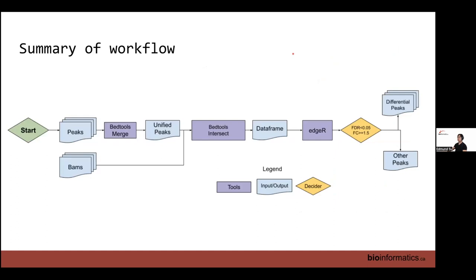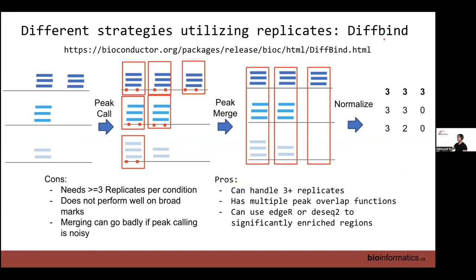To summarize this workflow: start with peaks and BAMs, read peaks into bedtools and merge to get a unified peak set, supply this peak set with BAMs into bedtools to enumerate reads per peak, produce a data frame, read into R, use a statistical package like edgeR to calculate statistics, then threshold by q-value or fold-change to get differential peaks.